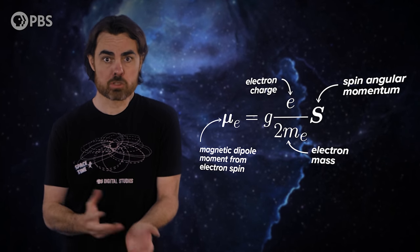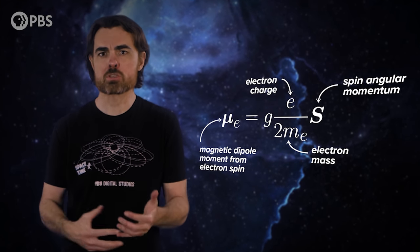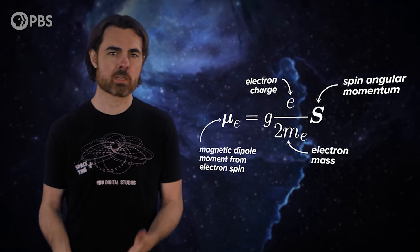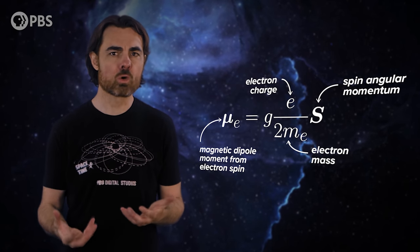For the electron, g is around 2. So the electron responds to a magnetic field twice as strongly compared to what you'd expect for an equivalent classical rotating charge. Quantum electrodynamics tells us exactly what this difference is.